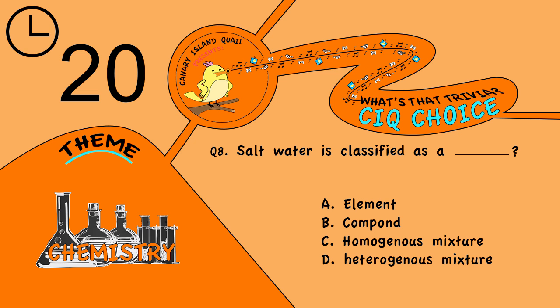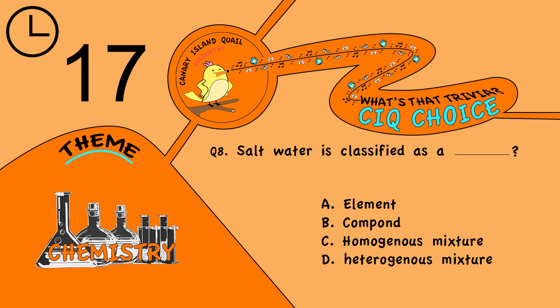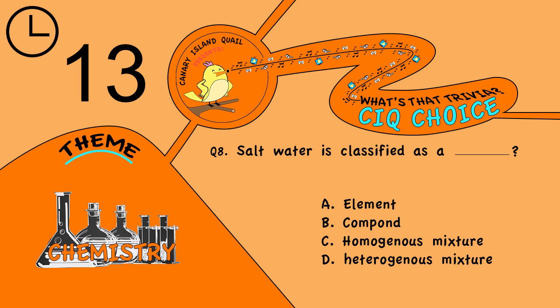Question 8. Salt water is classified as: A, element; B, compound; C, homogeneous mixture; or D, heterogeneous mixture?